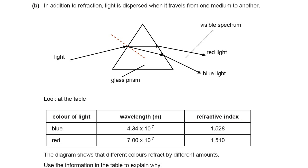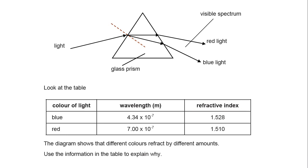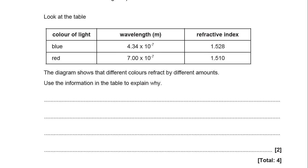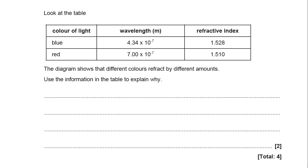The diagram shows that different colours refract by different amounts. Use the information in the table to explain why. So two marks. Have a little think about what I've told you and have a little think about what I told you to remember from the first one and try and write two clear statements to pick up the two marks.